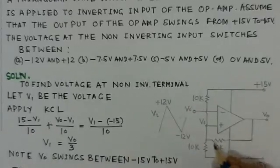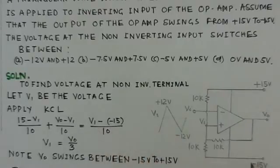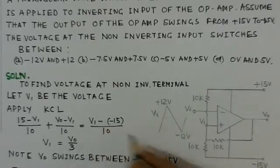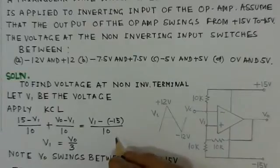this current V2, this current is going out, so this current V1 minus minus 15 over 10. So this